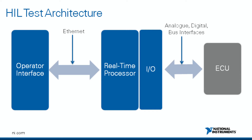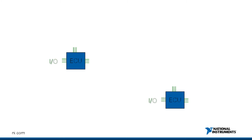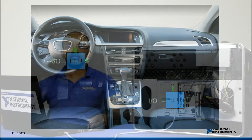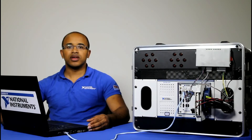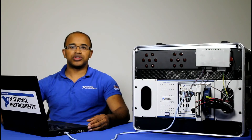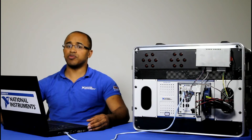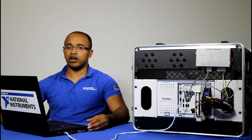The purpose of an HIL test is to provide the electrical signals needed to simulate the real-world system the ECU will be connected to. This allows you to test the inputs and the outputs of the ECU and its response to different stimuli and faults in the system.